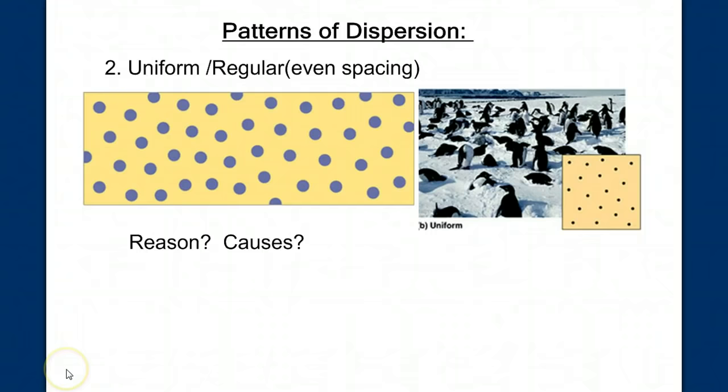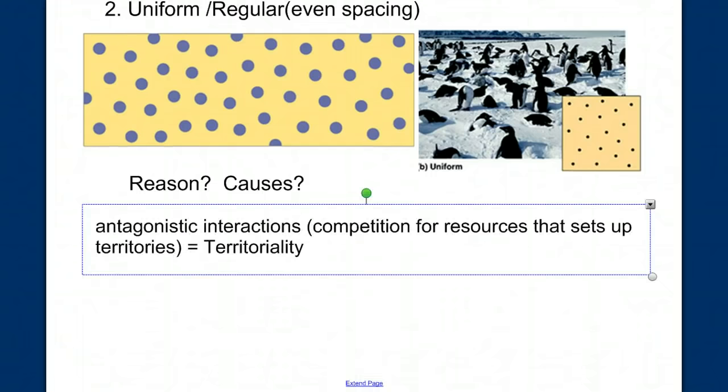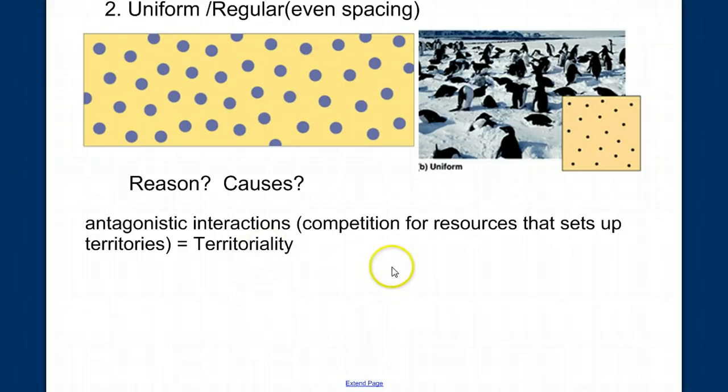Why when we look from above do these penguins all have a very specific amount of space around them, and they don't tend to encroach on each other's space? What ideas did you come up with? The answer has to do with competition. Antagonistic interactions are competition for resources that sets up territories. This territoriality allows them to avoid conflict by carving out their own space.